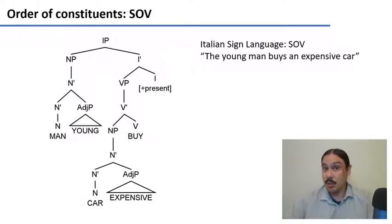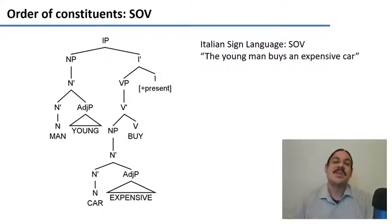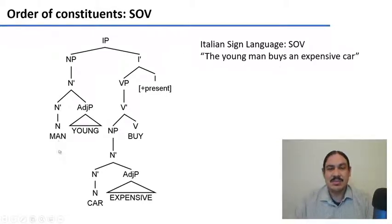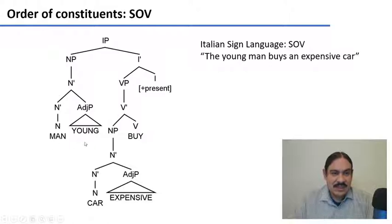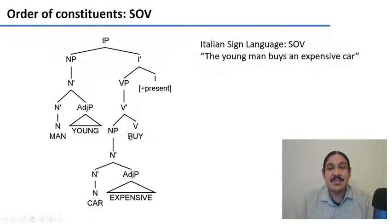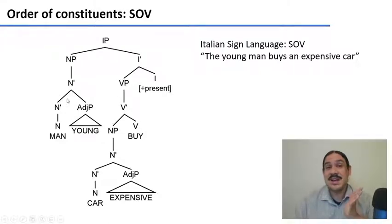Sign languages can have other orders. The Italian Sign Language is subject, object, verb. Here we have an example of the sentence 'the young man buys an expensive car.' The order would be: man young, car expensive, buy. First you have the subject 'man young,' then the object 'car expensive,' which is what's getting bought, and then the verb 'buy.' So whereas ASL is SVO, the Italian Sign Language is SOV — subject, object, verb.